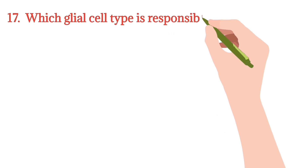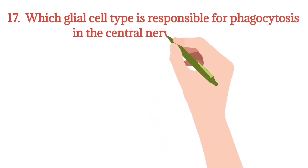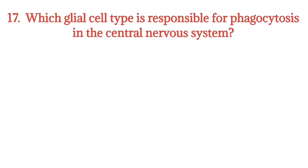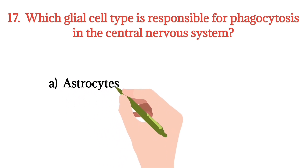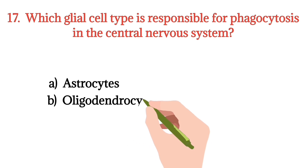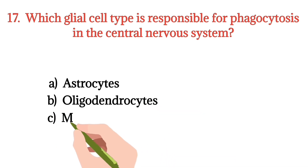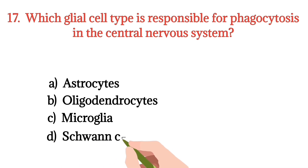MCQ number 17. Which glial cell type is responsible for phagocytosis in the central nervous system? Option A: Oligodendrocytes. Option C: Microglia. Option D: Schwann cells. The right option is Option C.